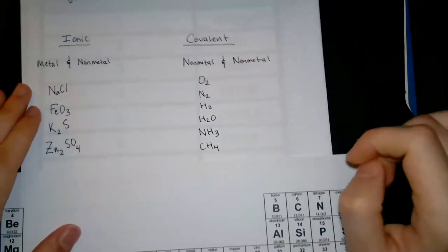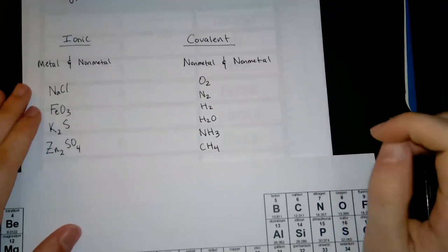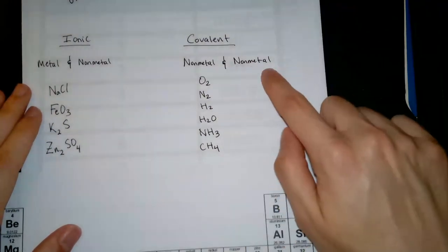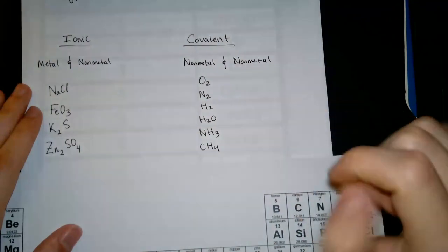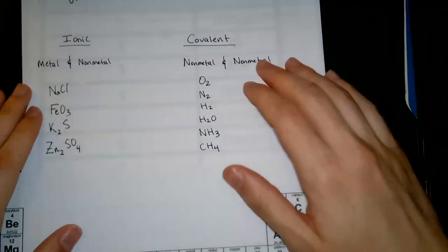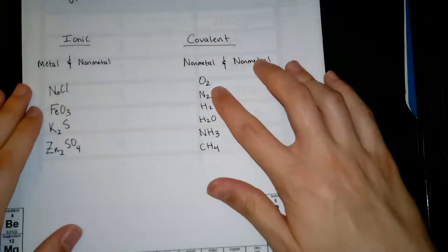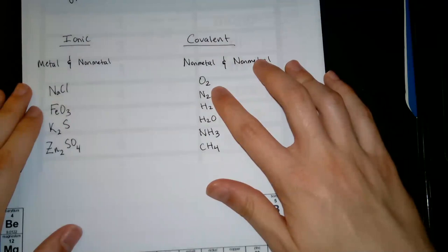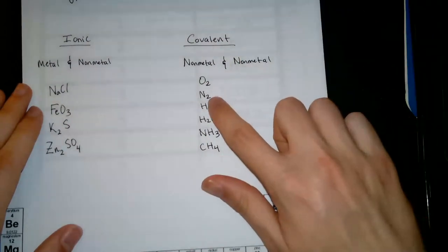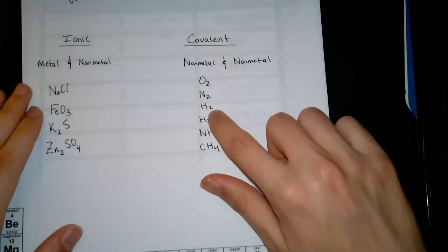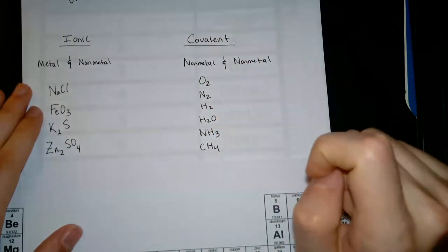And now with covalent, we see it's a non-metal and a non-metal. So in covalence, you're not going to see any metals. First we have oxygen gas. So it's just an oxygen atom bonded to another oxygen atom. Two non-metals, covalent bond. Same with nitrogen gas and hydrogen gas. It's just non-metals bonded together.